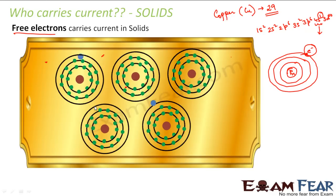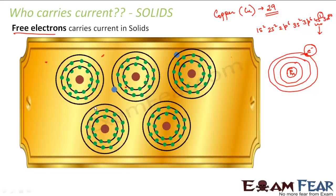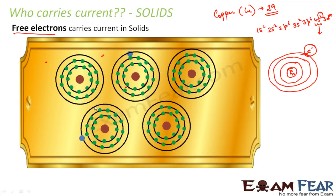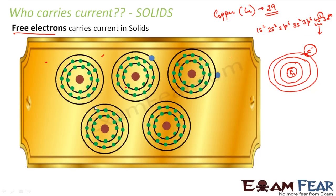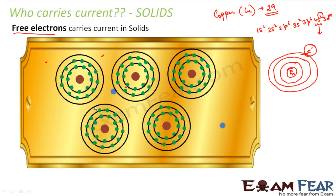So what does this valence electron do? It keeps jumping from one atom to another, and that is how it keeps moving inside the solid. So these electrons are free and they carry current as they move. So the movement of free electrons basically gives rise to current in case of a solid.